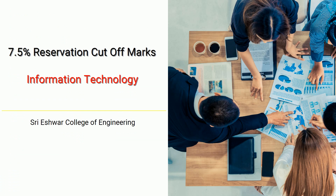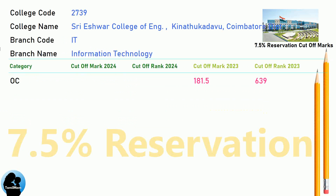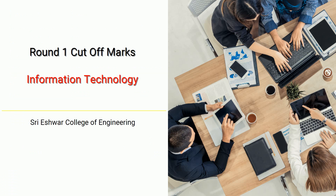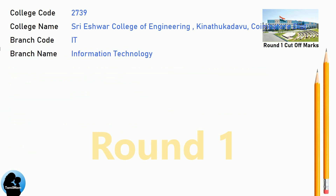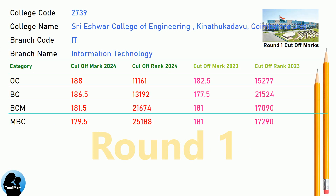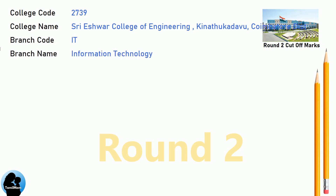DNA 7.5 Reservation Cut-Off for Shri Aishwara College of Engineering in Information Technology. DNA Round 1 Cut-Off for Shri Aishwara College of Engineering in Information Technology. DNA Round 2 Cut-Off for Shri Aishwara College of Engineering in Information Technology.